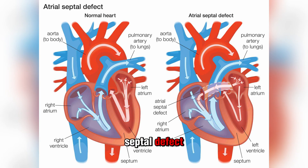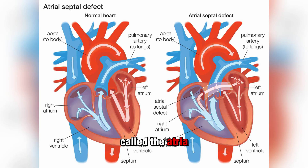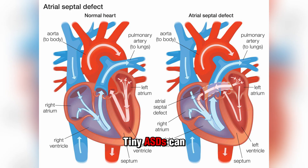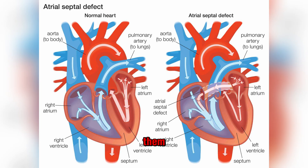2. Atrial Septal Defect (ASD): An atrial septal defect is a hole in the wall that separates the heart's two upper chambers, called the atria. Most ASDs don't close on their own. Tiny ASDs can often be left alone, but larger ASDs may require a procedure or heart surgery to close them.